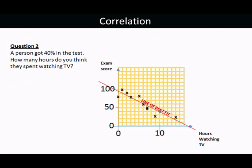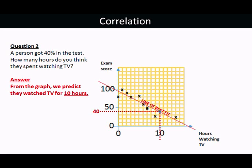Question 2. The person got 40% in the test. How many hours do you think they spent watching TV? This question is asking you to do it the other way. Read across from 40% in the test until you hit the line and then down to 10 hours in this case. From the graph, we predict they watched TV for 10 hours.